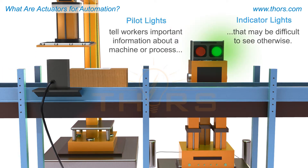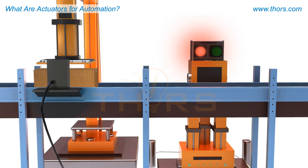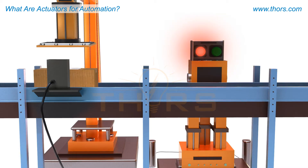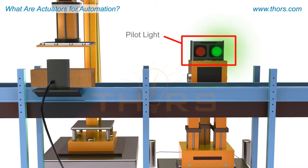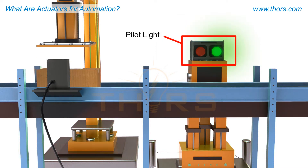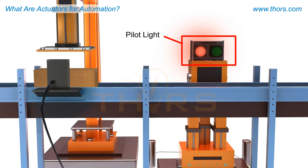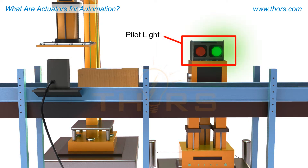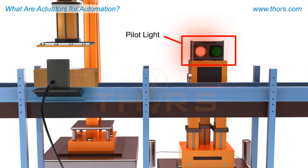For instance, when a box is at the labeling station and is detected by a photo-eye, the controller will turn on a pilot light, which indicates that a box is present. Once the box has been labeled, another light may be switched on, thus indicating that the box has been labeled and is now ready for further processing.